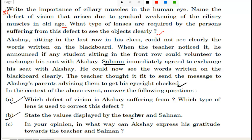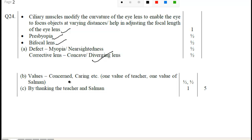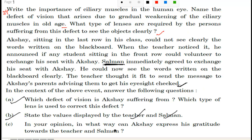State the values displayed by the teacher and Salman. The teacher is very caring and also concerned about Akash's performance in the examination — if he cannot see what the teacher writes on the board, it will hamper his performance in the exam and his future. Salman's value is that he is caring as well as helpful.